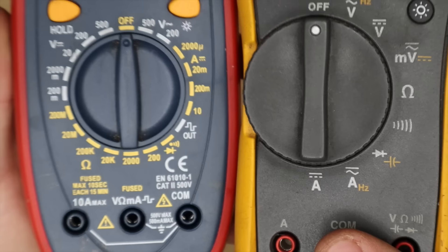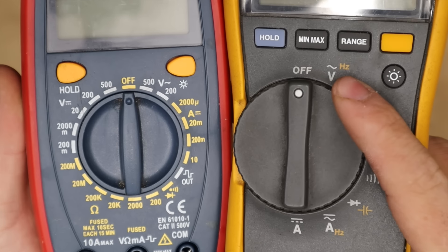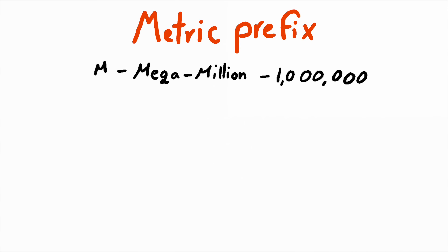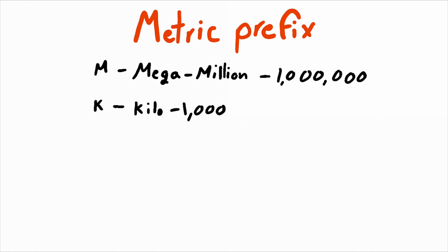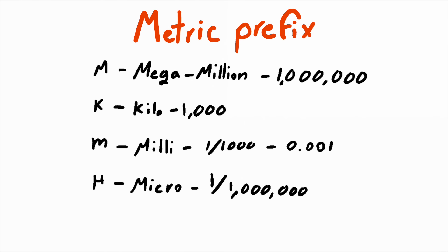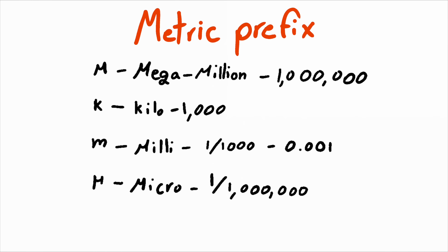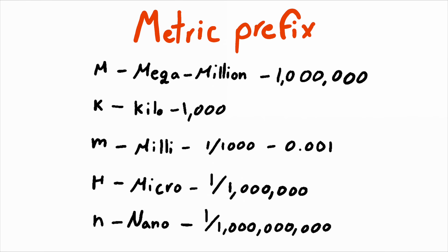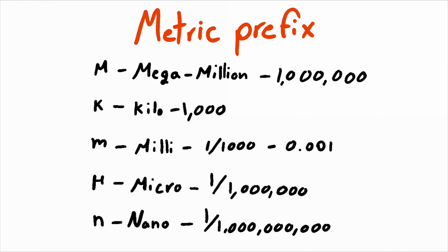But there's a few more things we have to learn to fully understand everything on a meter. Another important thing to learn is measurement units. Those measurement units are capital M which is million, capital K which is kilo which is one thousand, lowercase m which is milli which is one one-thousandth, and this symbol which is micro which is one one-millionth. Rarely you'll also see a lowercase n meaning nano which is one one-billionth.